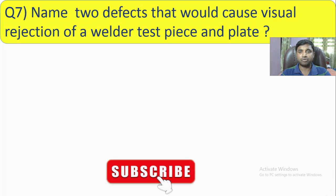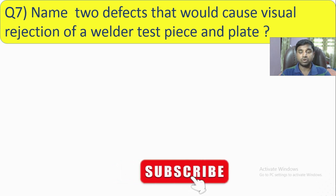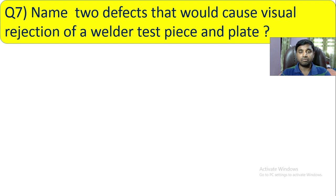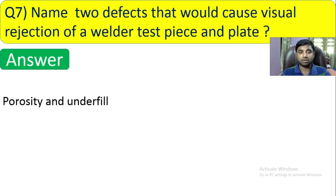Question number 7: Name two defects that would cause visual rejection of a welder test piece on plate. When a welder is doing welding on a test piece and you see certain defects, the piece would be rejected. The answer is porosity and underfill. If you see porosity and underfill during a welder qualification test, the test piece will definitely be rejected.